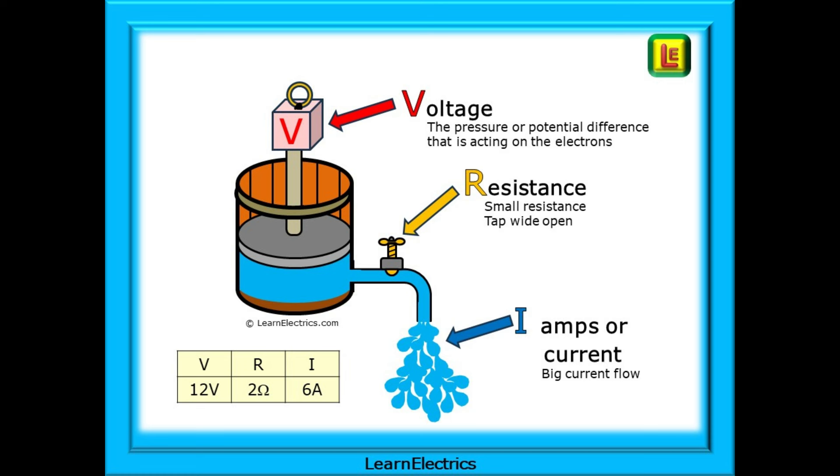The voltage, sometimes called the potential difference, is the pressure that is acting on the electrons, the water in this case. Resistance is represented by the tap. With the tap wide open, there is little resistance to the flow of water. In a circuit, with small resistances, there will be little resistance to the flow of electrons in the circuit.